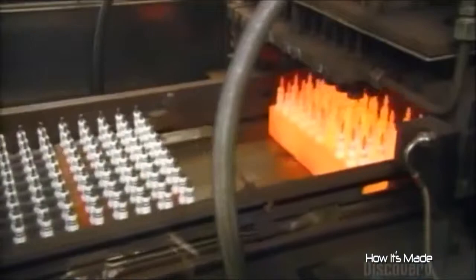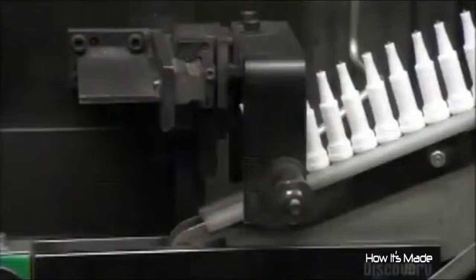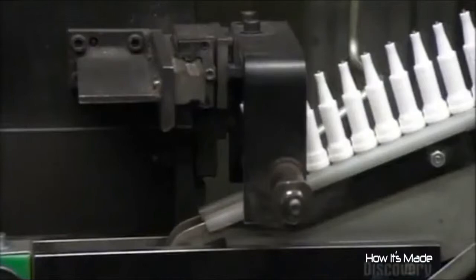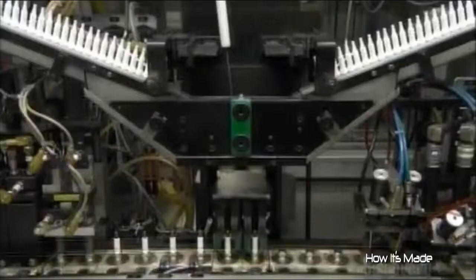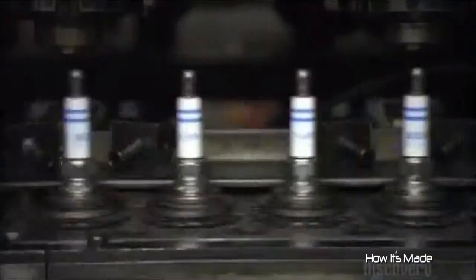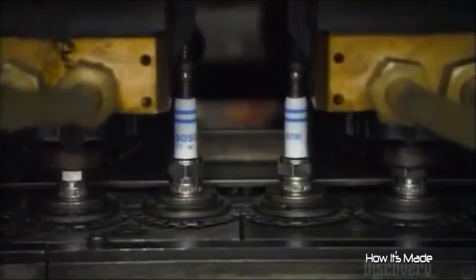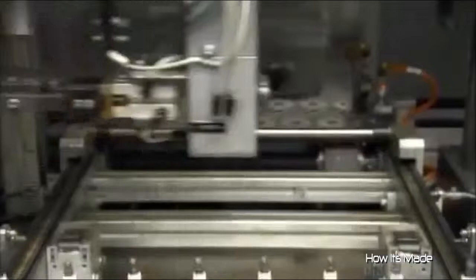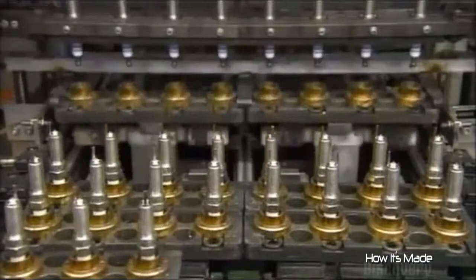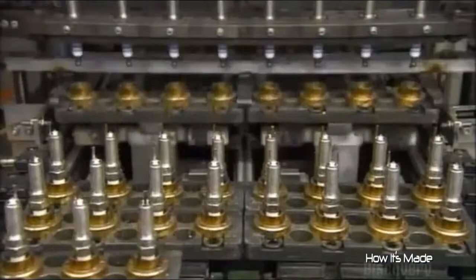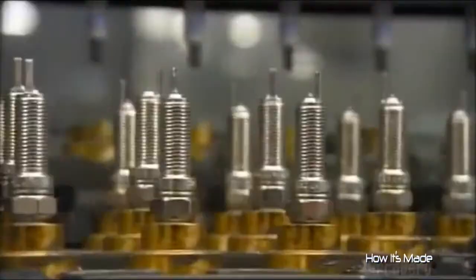Nozzles squirt oil onto the metal shells to lubricate them. The insulators funnel into the grip of robots which install them into the shells. They slide in easily because of the lubrication job. Tools called shrinking punches apply an electrical current to each shell to fit it tightly to the insulator. A robot positions the assembly right side up with the side electrode protruding, then bends that side electrode towards the center one.